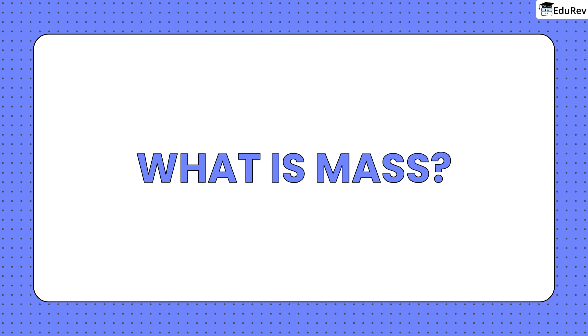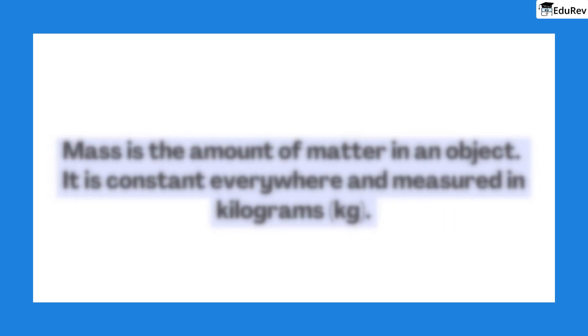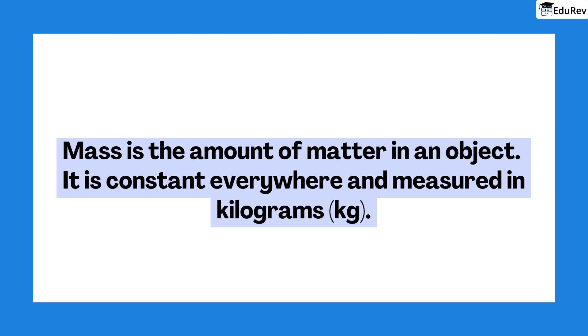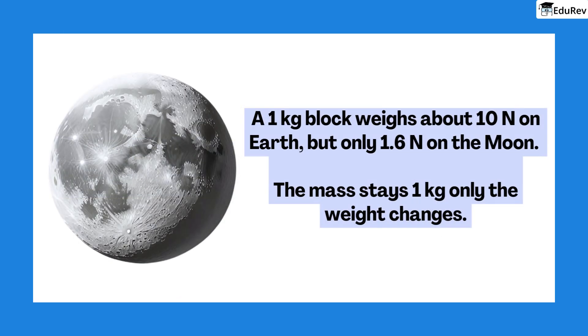After weight, let us look at mass. Mass is the amount of matter in an object. It is constant everywhere and measured in kilograms, kg. For example, a 1 kilogram block weighs about 10N on earth, but only 1.6N on the moon. The mass stays 1 kilogram. Only the weight changes.